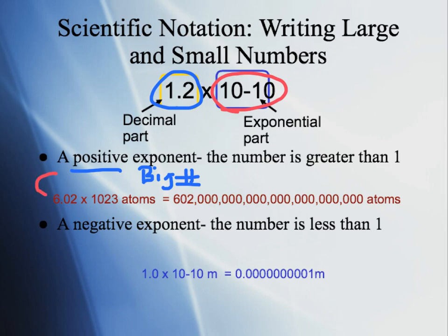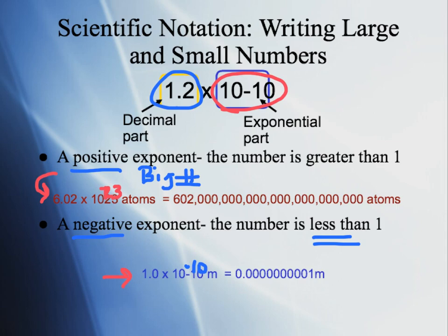For example, Avogadro's number is 6.02 times 10 to the 23rd power — that's 602 with 21 zeros behind it, so it's obviously a really big number. If a number has a negative exponent, that means it is less than 1 — it's a fraction. For instance, 1.0 times 10 to the negative 10th is 0.0000001 meters — a really small number.